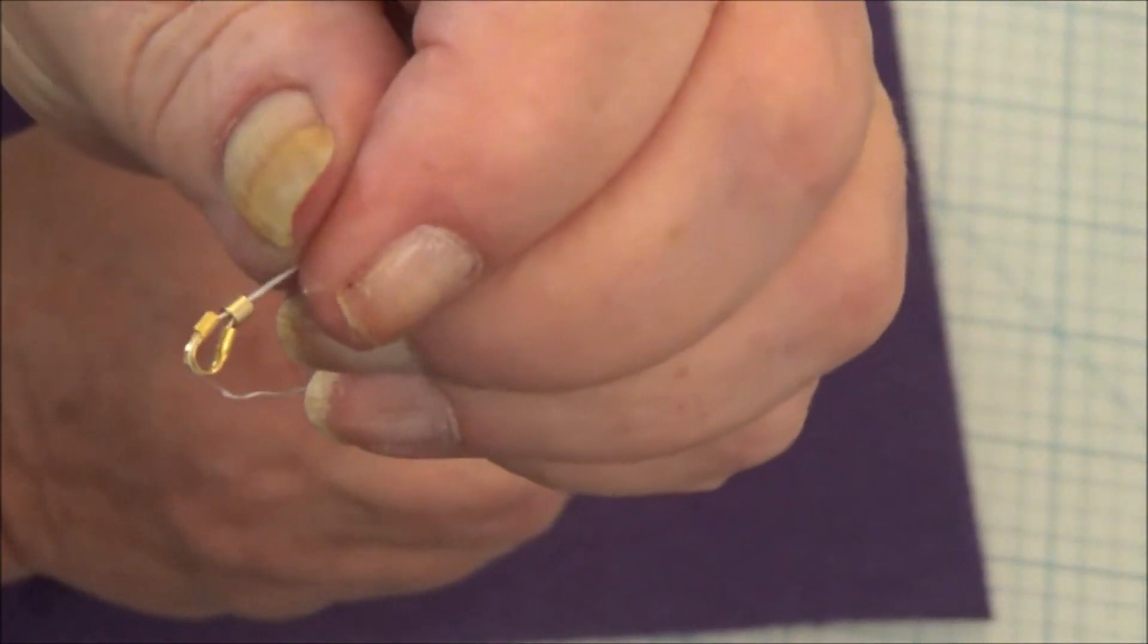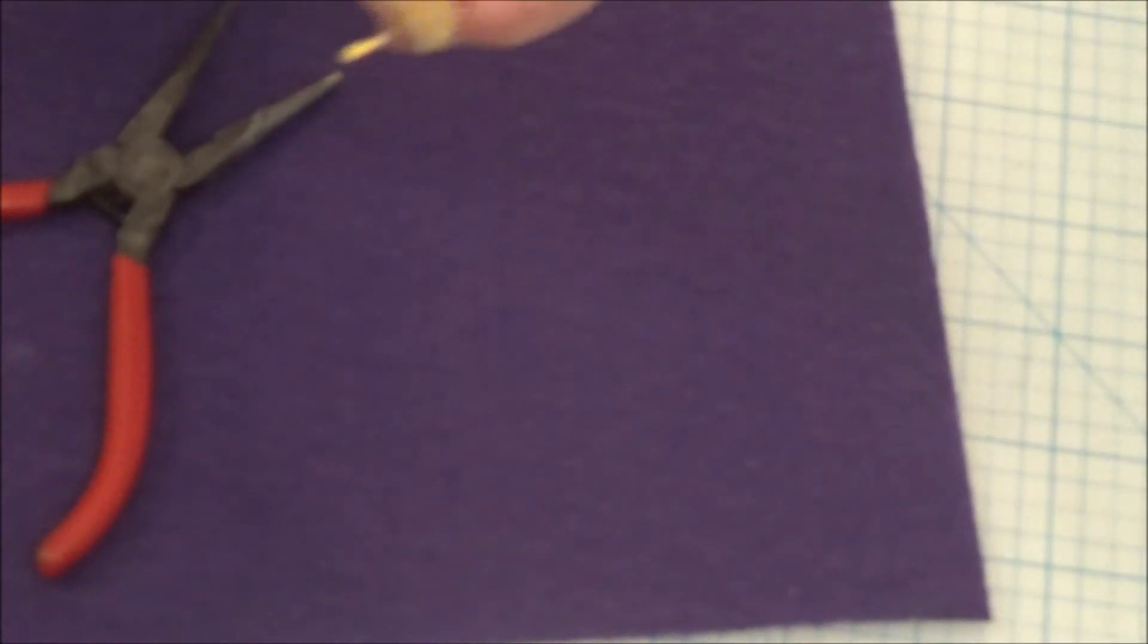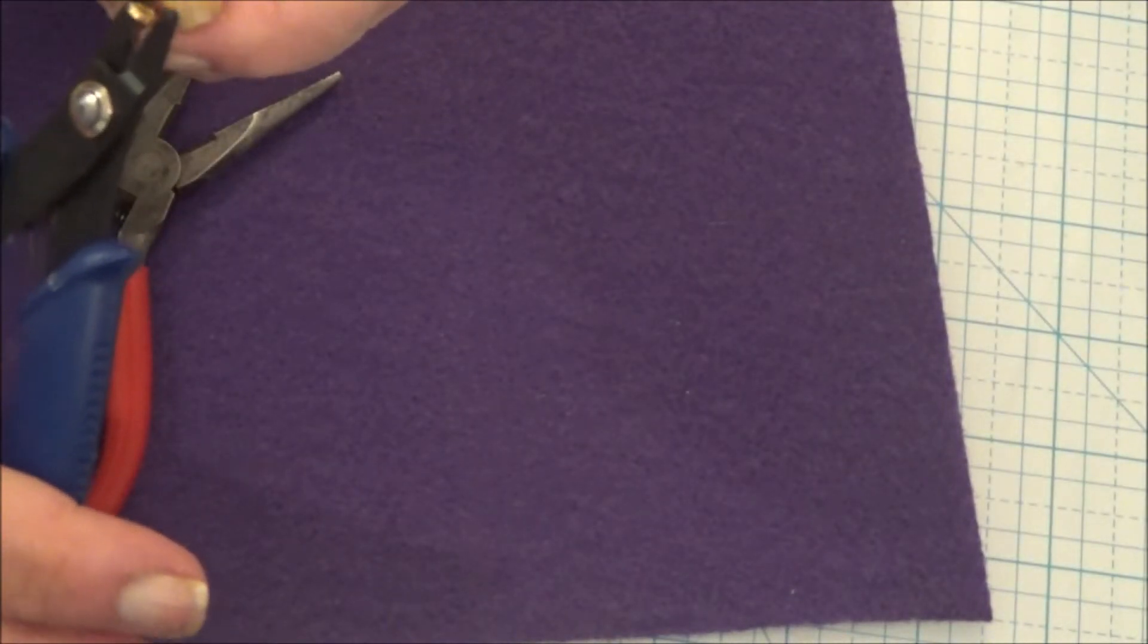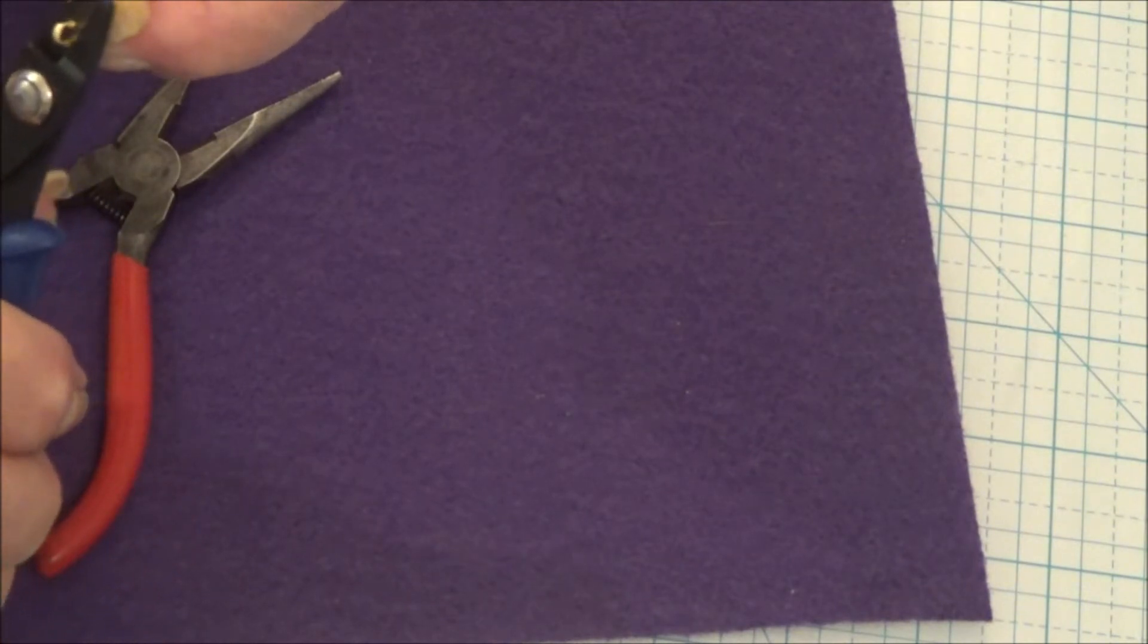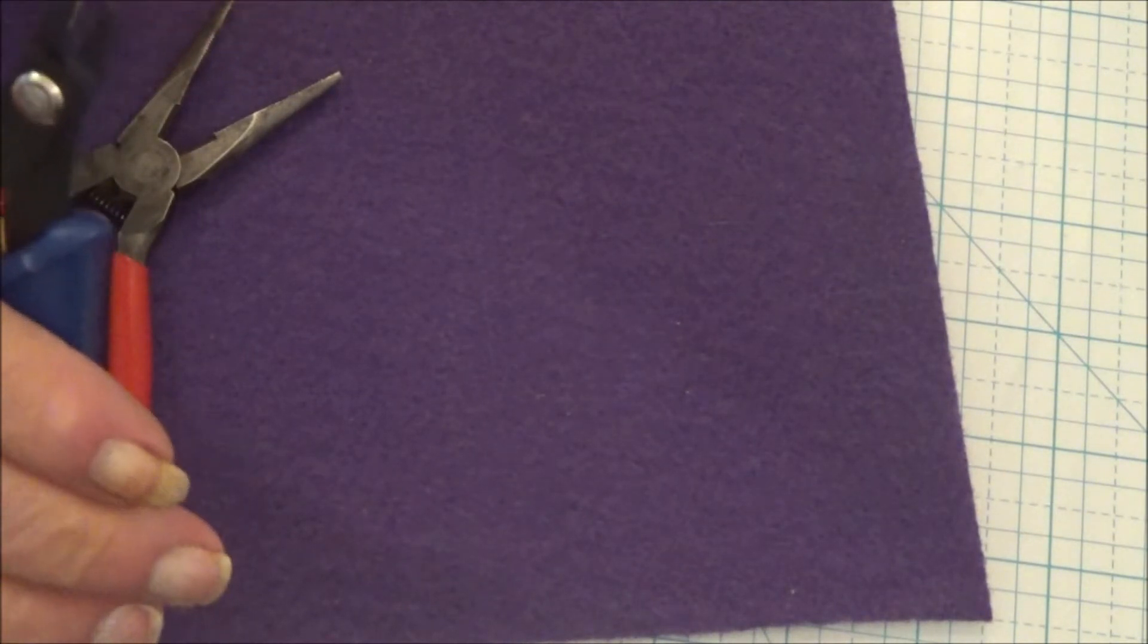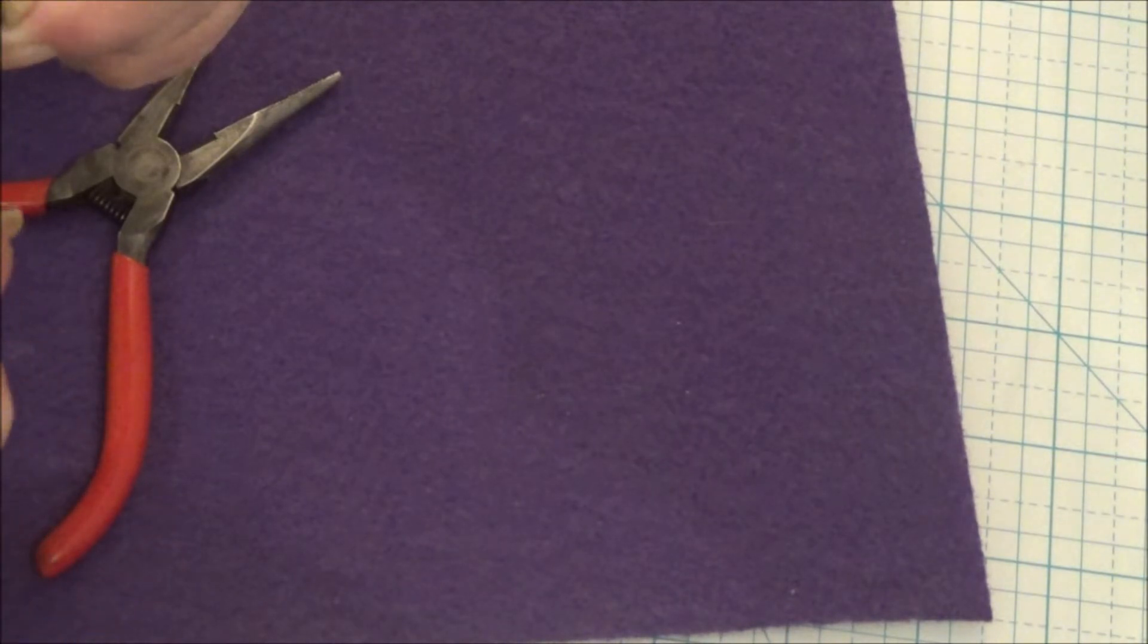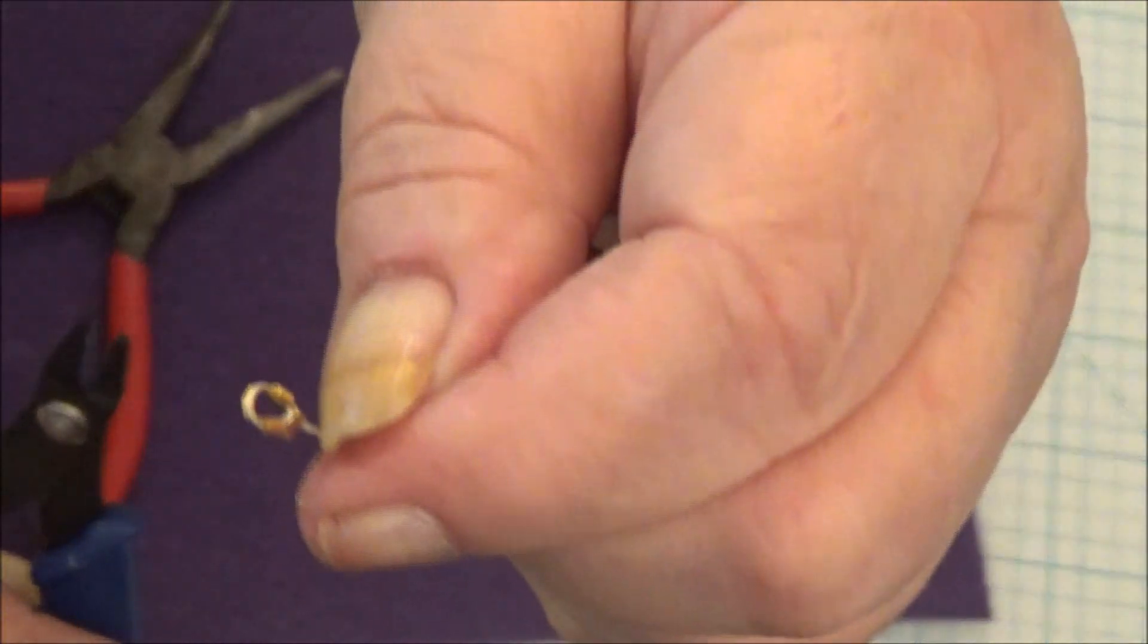And that's what it looks like. Now I'm going to crimp my crimp bead. I'm going to take my crimping tool. Put it in the last crimper space. And push. And it's going to go flat. There it is flat.